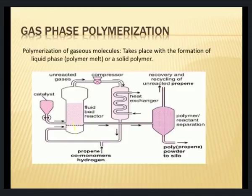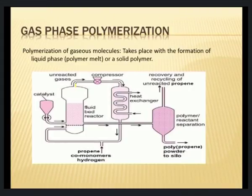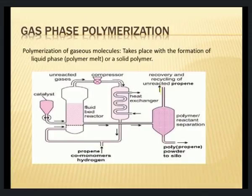In gas phase reaction, the propene monomer along with hydrogen enters the fluid bed reactor, where a catalyst also enters. You have the monomer, a continuous flow of catalyst, and the reaction taking place. At the top, only unreacted gases are separated; the formed polymer travels through a pipe into a separation path where polymer and reactants are separated, and polypropylene or polyethylene in solid powder form is collected. Unreacted gaseous propene is recovered and recycled back into the reaction bath.